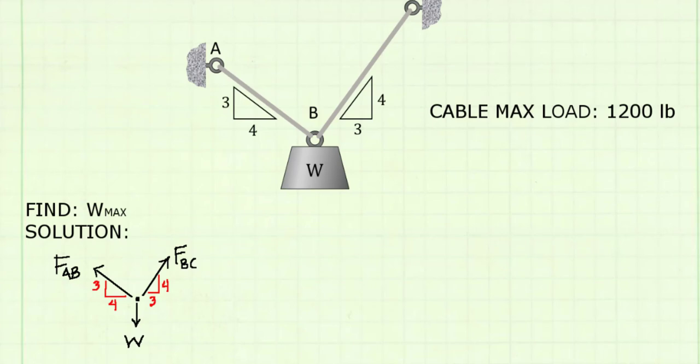Now let's think through this problem for just a minute. The maximum load we can have in a cable is 1,200 pounds. Don't make the rookie mistake of putting 1,200 pounds on both cables AB and BC. That's not going to happen.